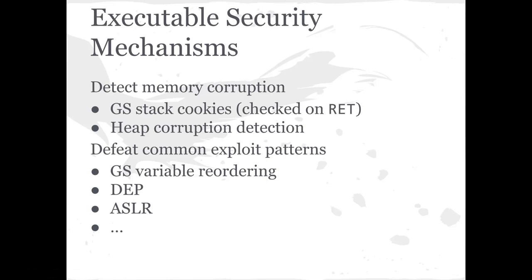Stack cookies work by padding critical pointers on the stack with a cookie that's stored somewhere in the process space. On certain instructions, the neighboring cookies are checked. Whenever ret is called, a cookie right before the return address on the stack is checked to see if it's been overwritten. If it's been overwritten, it SIG aborts to prevent EIP from being hijacked. Also, checking metadata on the heap allows the process to detect whether or not the heap has been corrupted, perhaps in a buffer overflow.